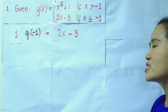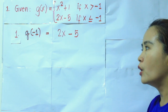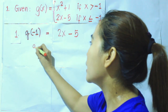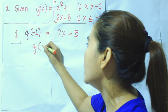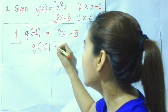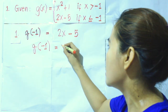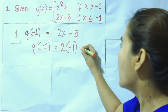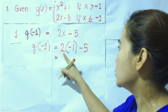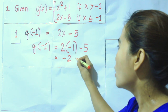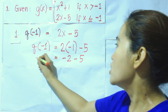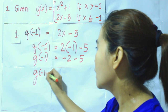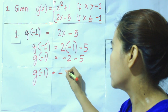To evaluate, we replace all the x's by negative 1. So that is 2 multiplied by negative 1 minus 5, which equals negative 2 minus 5. Therefore, g of negative 1 is equal to negative 7.